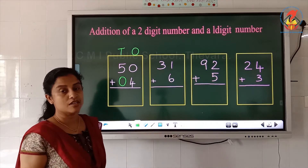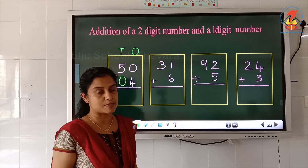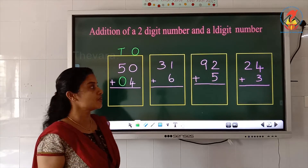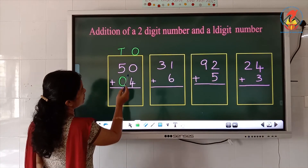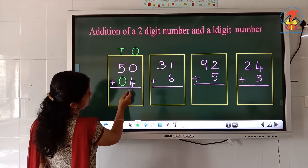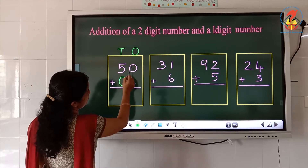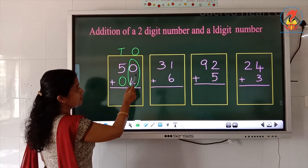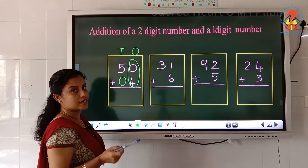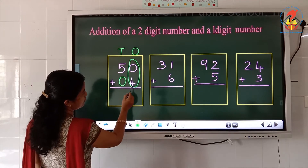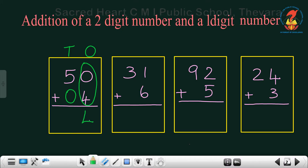During addition, first we have to add the numbers in the ones place, then we have to add the numbers in the tens place. So which are the numbers in the ones place? 0 and 4. So the numbers in the ones place are 0 and 4. So first we have to add 0 and 4. What is 0 plus 4? When we add a number with 0, the answer is the same number. So 0 plus 4 is 4. We have to write that in the ones place.